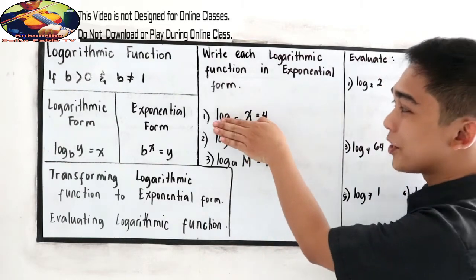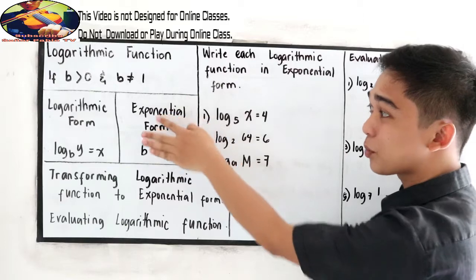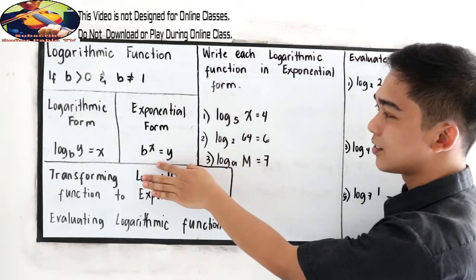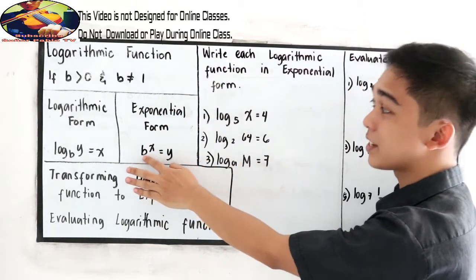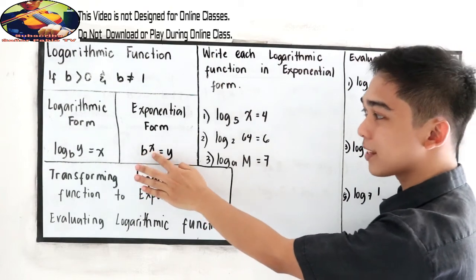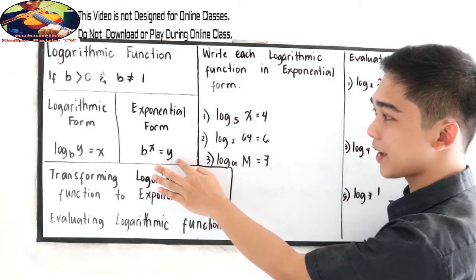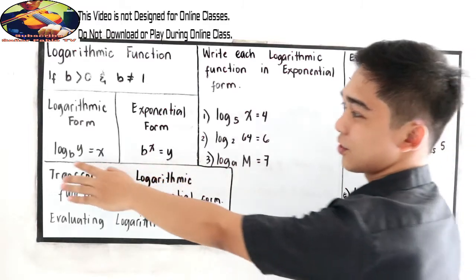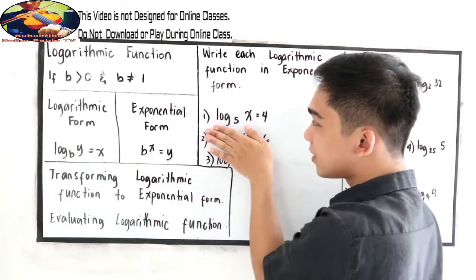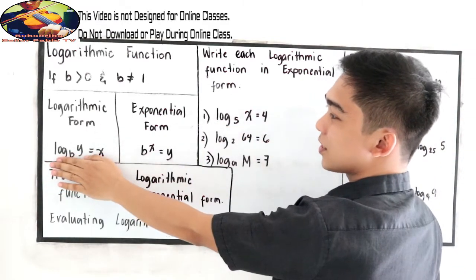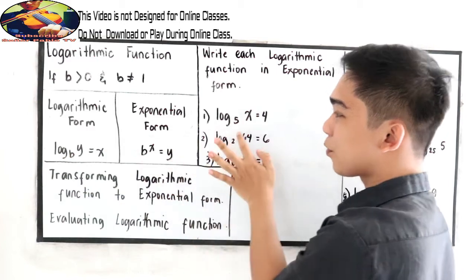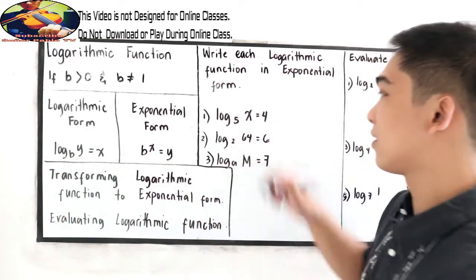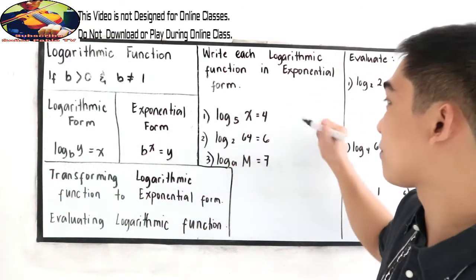From logarithmic form, write into exponential form. So base raised to the exponent is equal to y. Here is our given. In this case, our base is 5.